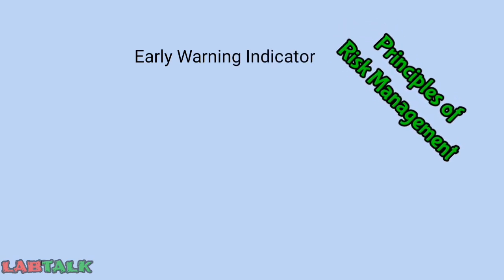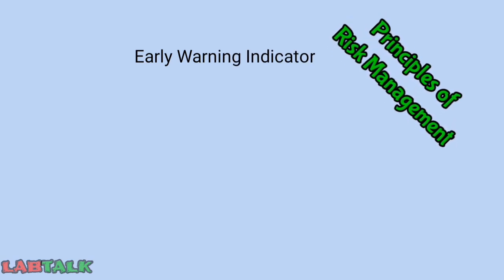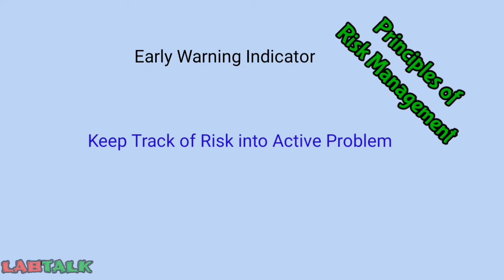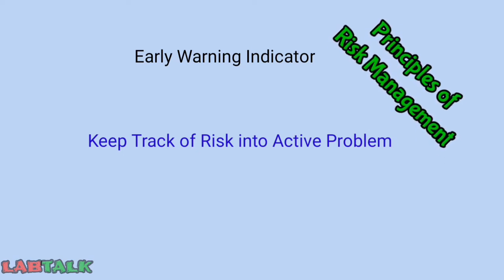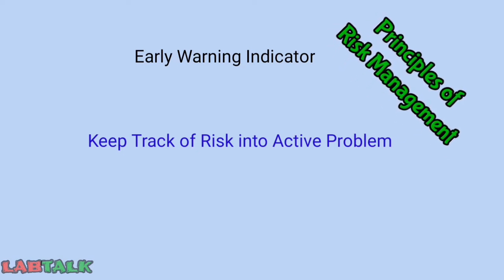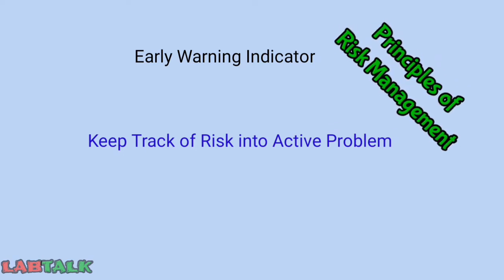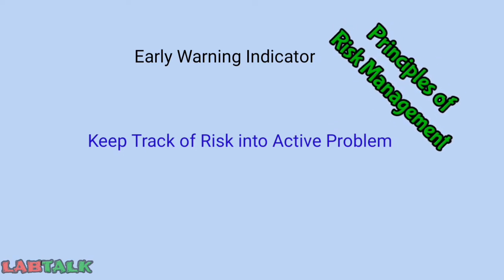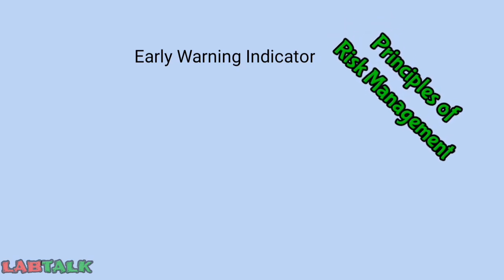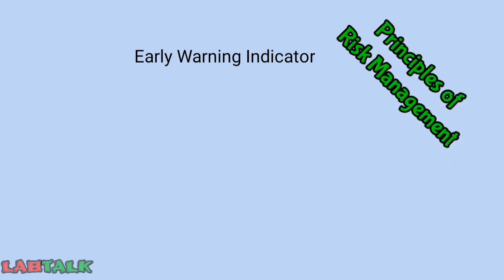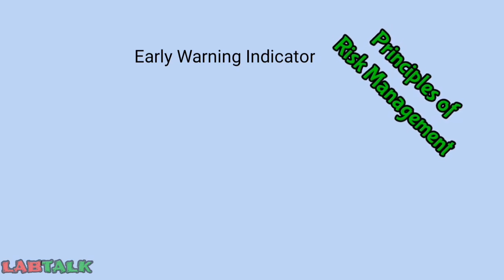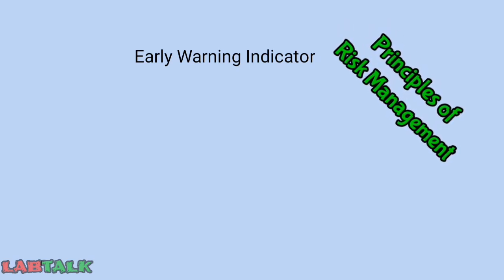The next principle is early warning indicators — keeping track of early signs of risk that can translate into actual problems. This can be achieved through continual communication at each level. It is important to enable and empower each person to deal with threats and harm at each level and at each function.